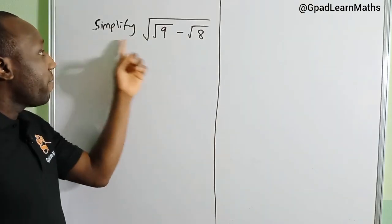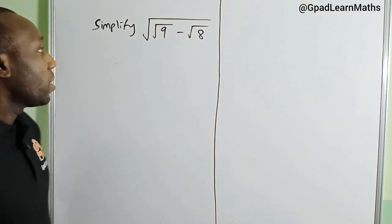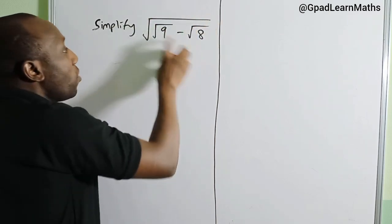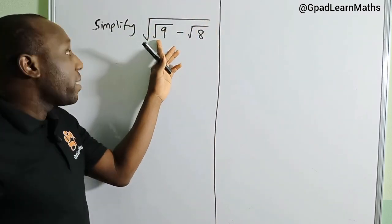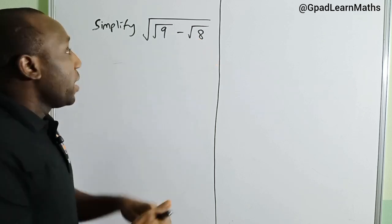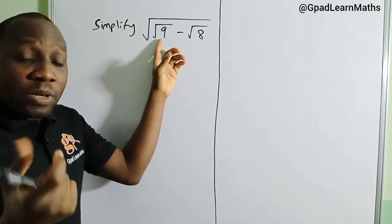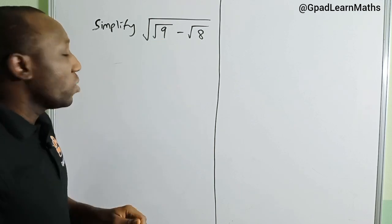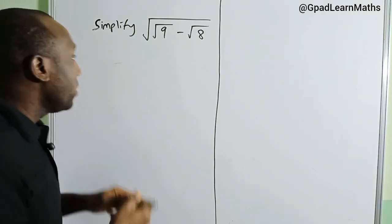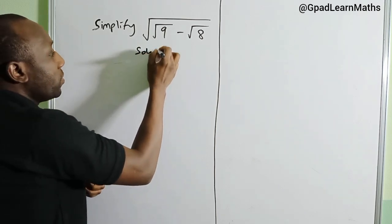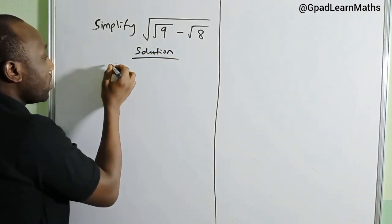Hello friends, I want us to simplify this surd expression. This is the square root of √9 - √8. To find the square root of 9 is very easy because 9 is a perfect square, so √9 = 3.